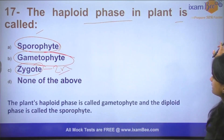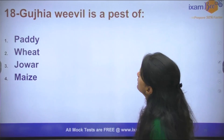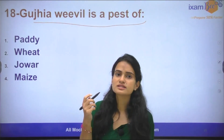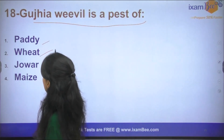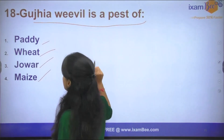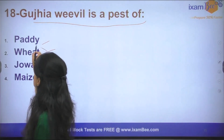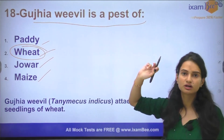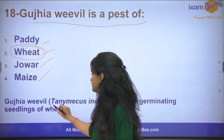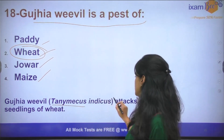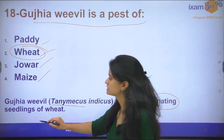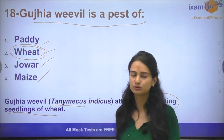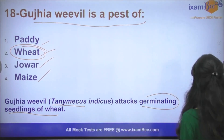The next question: Gujhia weevil is a pest of which crop? Is it paddy, weed, wheat, or maize? It is a pest of wheat. Gujhia weevil attacks the wheat plant, and its scientific name is Tanymecus indicus, which attacks the germinating seedlings of wheat.